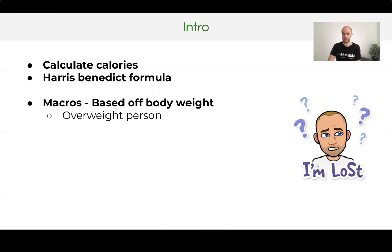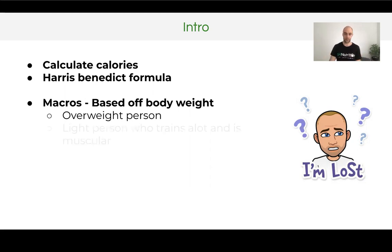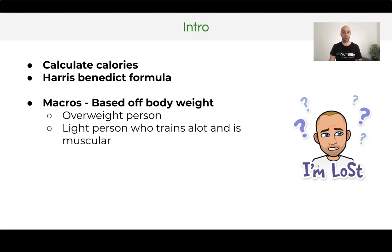There are issues with basing macros off body weight. If you are an overweight person, say over a hundred kilos, then using your body weight is going to be inconsistent because you don't want to be that body weight — you may want to drop 10 or 15 kilos. Equally, if you're a very light, lean, small person who trains a lot and is very muscular with a low body weight but a very high metabolic rate, basing it off body weight can also be inaccurate.